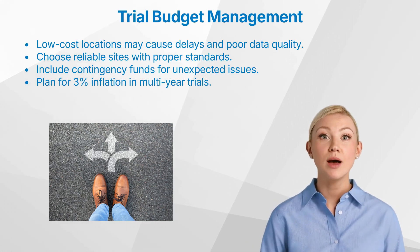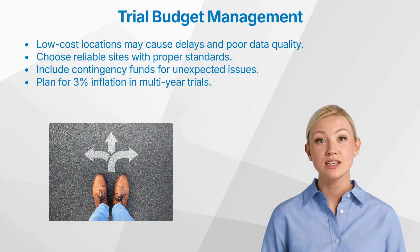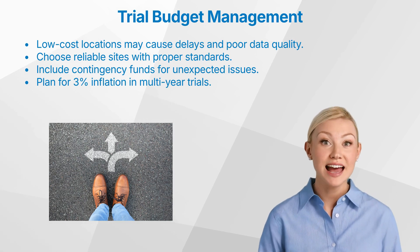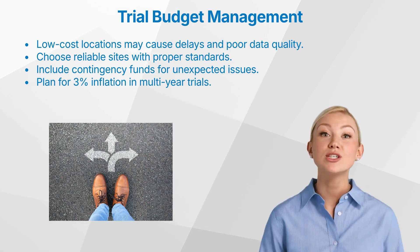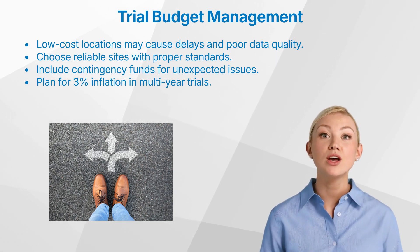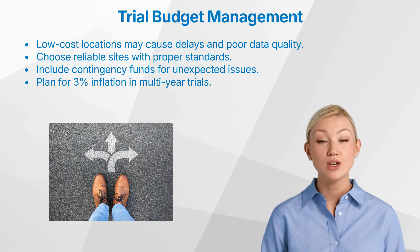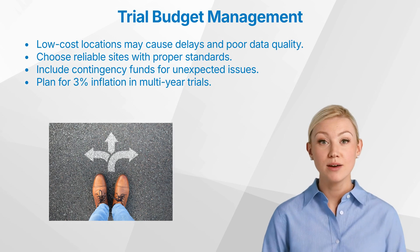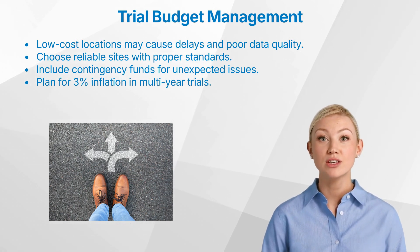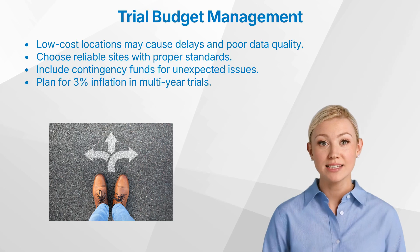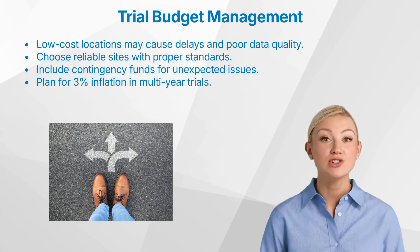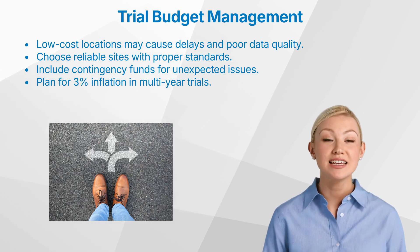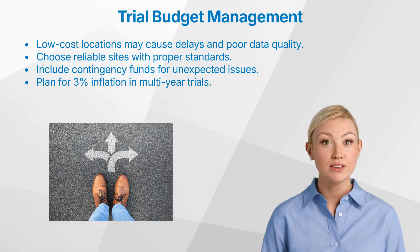Let's now talk about planning for unexpected costs. One of the realities of clinical trials is that things rarely go exactly as planned. It's important to anticipate unexpected costs, such as protocol amendments, site changes, or low recruitment rates. You should include a contingency fund for these situations, which might involve adding new sites, retraining staff if errors occur, or managing delays caused by unforeseen circumstances. Also, for multi-year trials, don't forget to account for inflation — plan for a minimum of 3% inflation to ensure your budget remains sufficient over time.